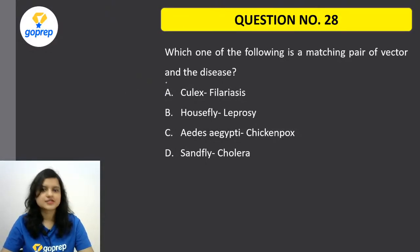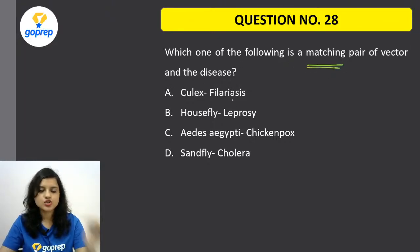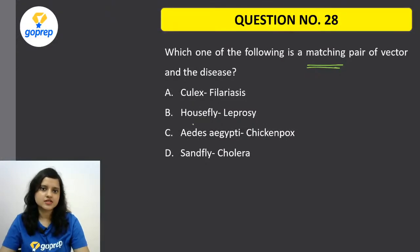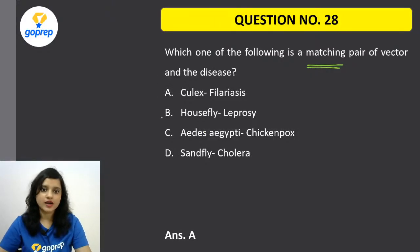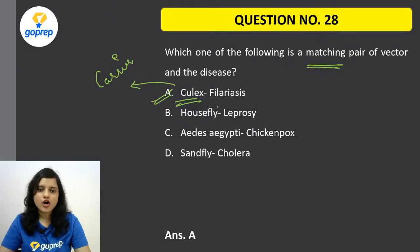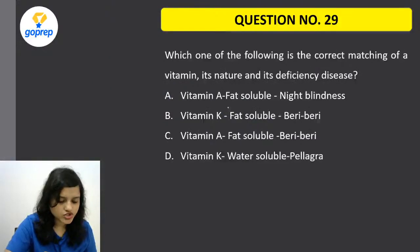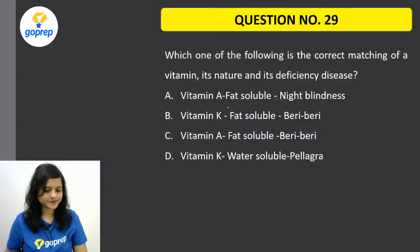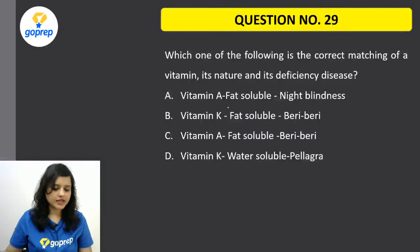Question number 28: Which one of the following is a matching pair of vector and disease — Culex/Filariasis, Housefly/Leprosy, Aedes aegypti/Chickenpox, or Sandfly/Cholera? The correct option is A — Culex. Culex is a vector or carrier for elephantiasis or filarial disease, which carries Wuchereria worm.